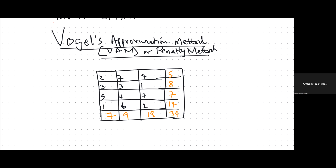This method involves the use of penalties, and usually penalties are computed from the cost matrix. A penalty is the difference between the smallest number in a given row and the second smallest number in the same row. So you pick the two smallest numbers and get the positive difference — that is the penalty.